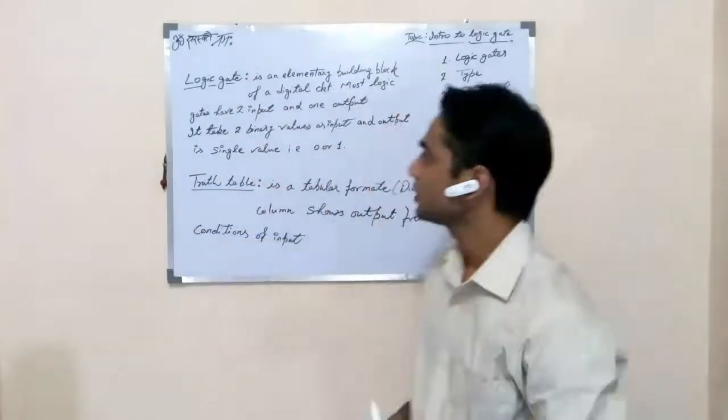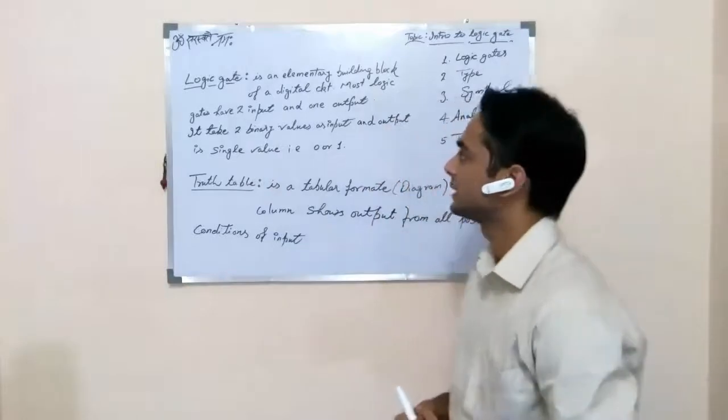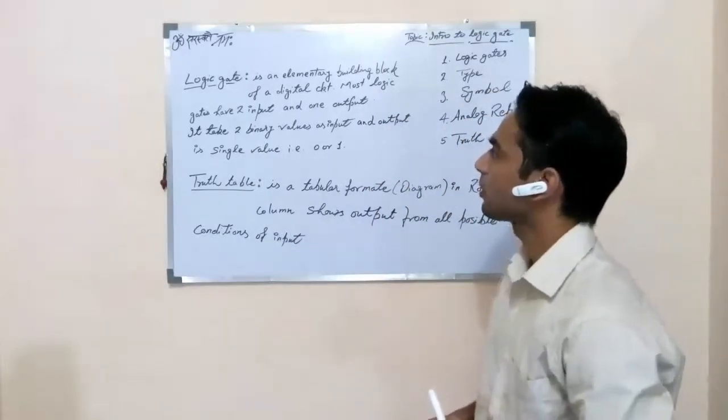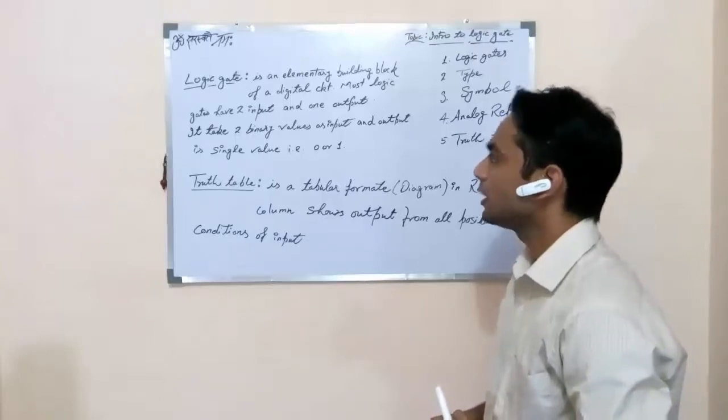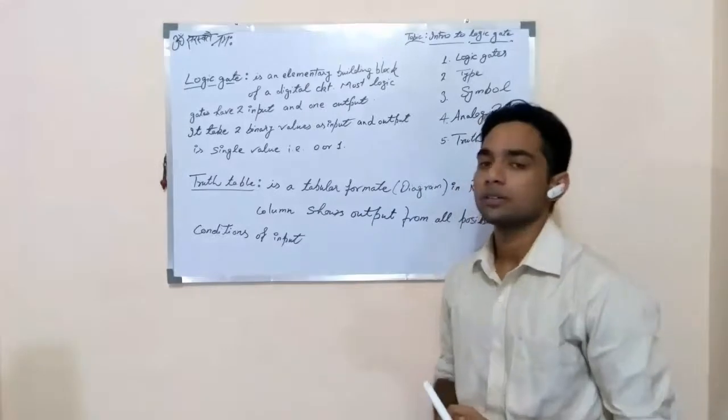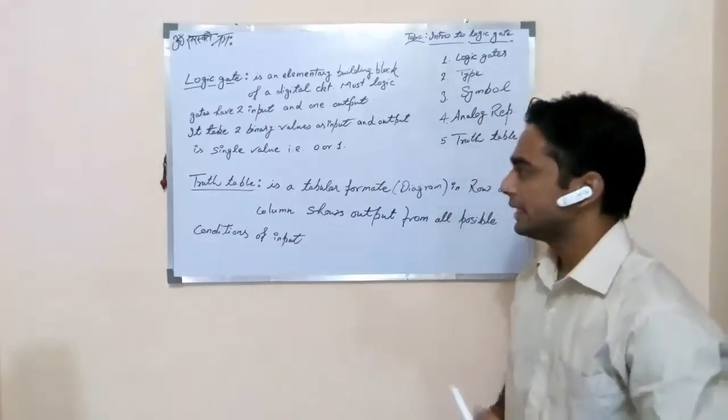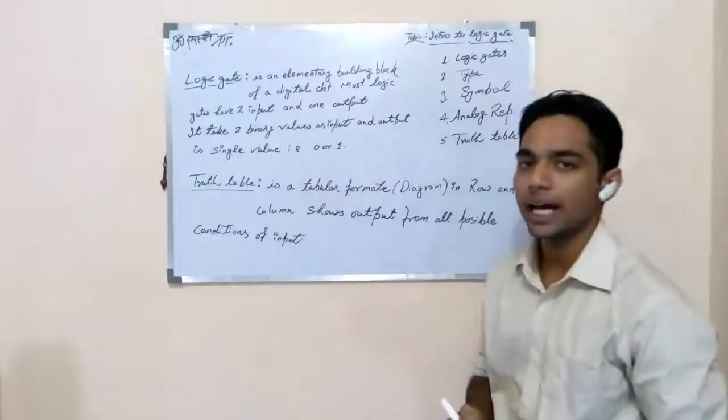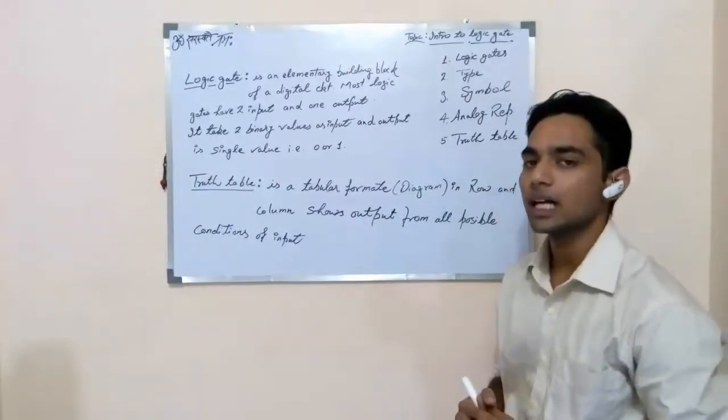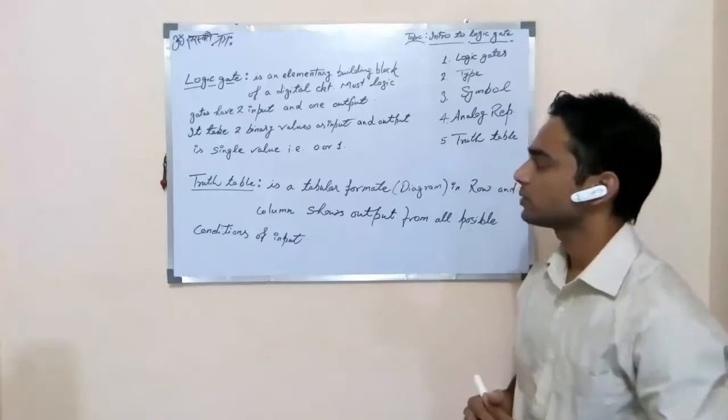So first of all, we should know about the logic gates. Logic gate is an elementary building block of digital circuit. Most logic gates have two inputs and one output. It takes two binary values as input and provides one binary value 0 or 1 as an output. And what is truth table?